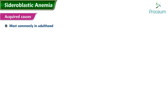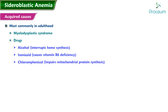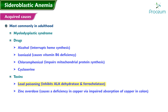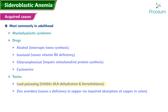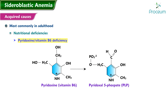Acquired causes: acquired sideroblastic anemia presents most commonly in adulthood. Causes include myelodysplastic syndrome, drugs — alcohol (interrupts heme synthesis), isoniazid (causes vitamin B6 deficiency), chloramphenicol (impairs mitochondrial protein synthesis), cycloserine — and toxins: lead poisoning (inhibits ALA dehydratase and ferrochelatase), and zinc overdose (causes copper deficiency via impaired absorption of copper in the colon).